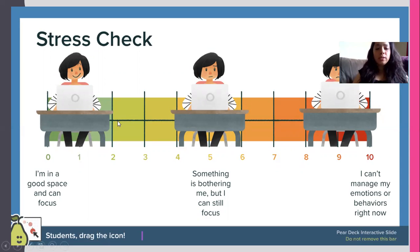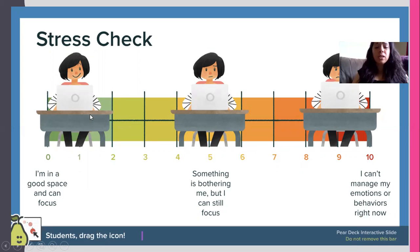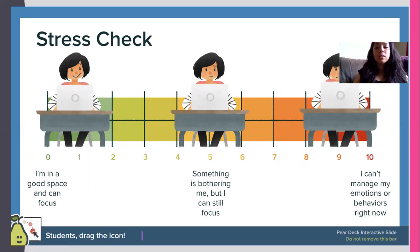At the beginning of every class I will try to do a stress check. A stress check means: are you in a good space and can you focus? Is there something bothering you but you can still focus, or is right now not a time you can focus? Green means you're great, the middle means you're okay, and red means it's hard for you right now to focus.